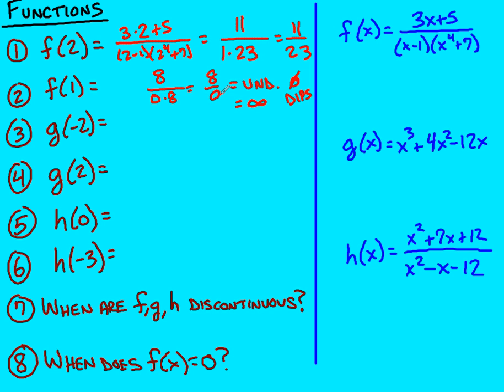G of negative two. So what we're going to do is try to plug in negative two. What I'm going to first do is plug in negative two to all this. So if I do that, let's change colors here. So negative two cubed, negative two to the third power will be negative eight, plus four times negative two squared. Negative two times negative two is positive four.